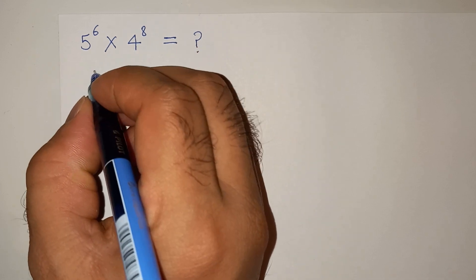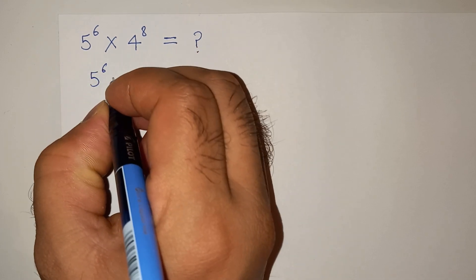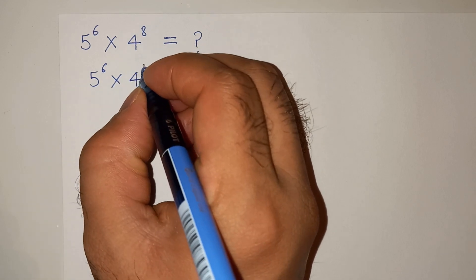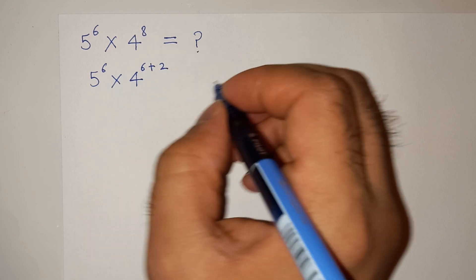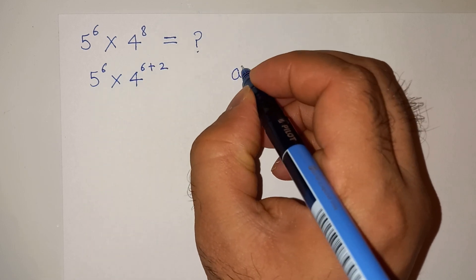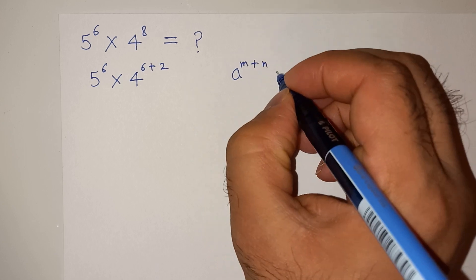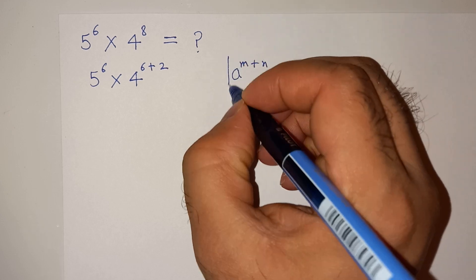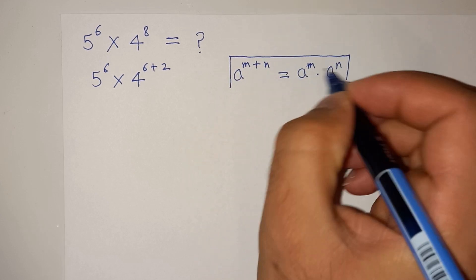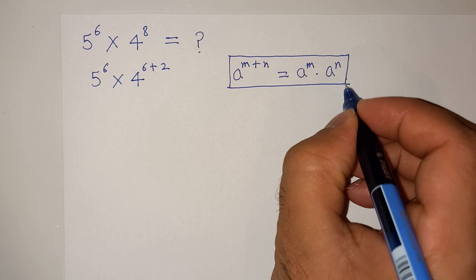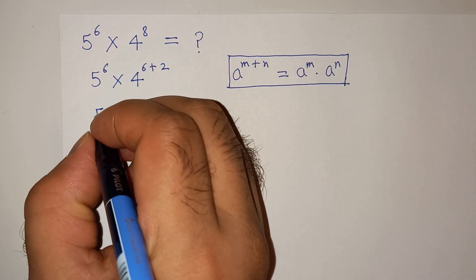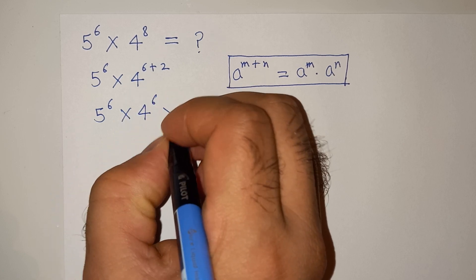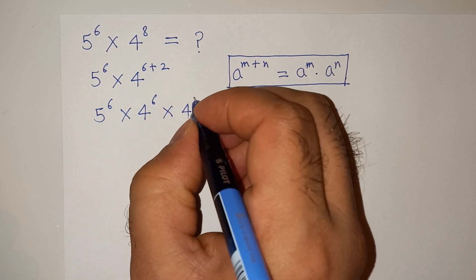We can write 5 power 6 multiplied 4 power 8 — the exponent 8 can be written as 6 plus 2. We know the exponential rule: a power m plus n equals a power m multiplied by a power n. We will apply this rule here, giving us 5 power 6 multiplied 4 power 6 multiplied 4 power 2.